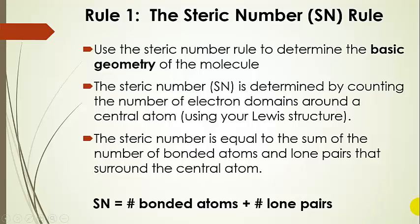The first rule is the steric number rule, which is used to determine the basic geometry of the molecule. You determine the steric number by counting the number of electron domains around a central atom — that means counting lone pairs and bonded atoms. The steric number is equal to the sum of the number of bonded atoms plus the number of lone pairs that surround the central atom.